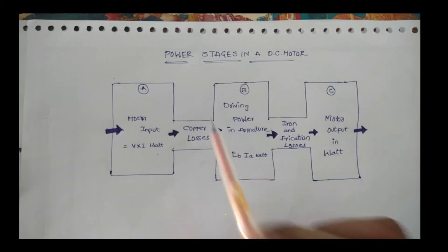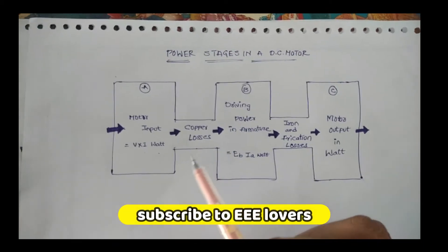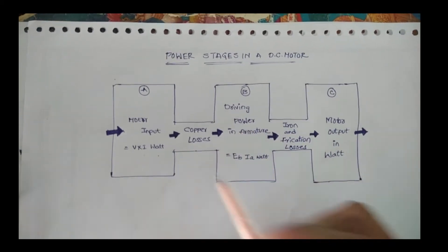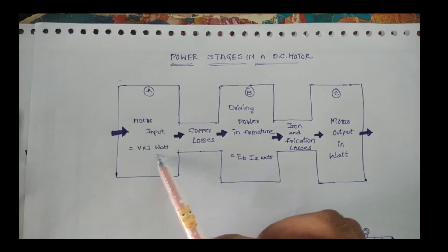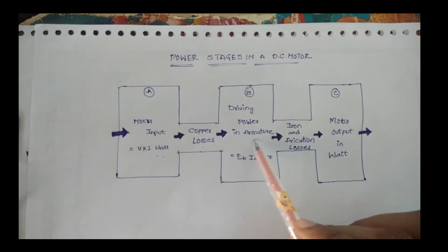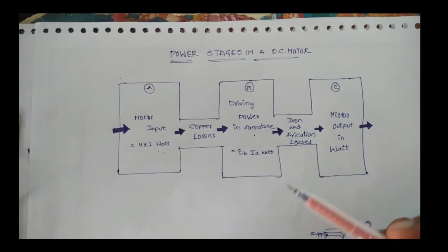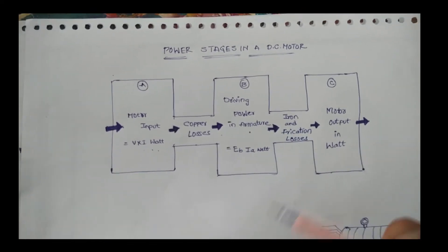It produces copper losses, which are dissipated. By giving the power to the armature, it produces mechanical energy, which is called the driving power.